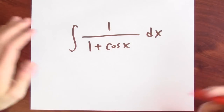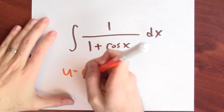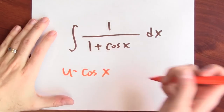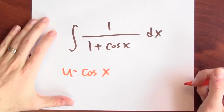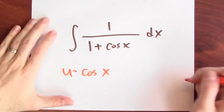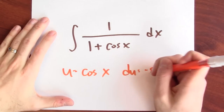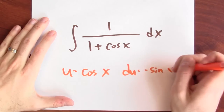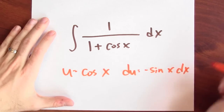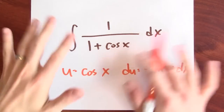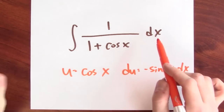Your first move might be to try the substitution u equals cosine x, in which case du is negative sine x dx, but there's no visible sine x in the integrand. Since we're talking about invisible substitutions, we should try to mess around with the integrand.